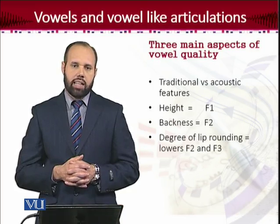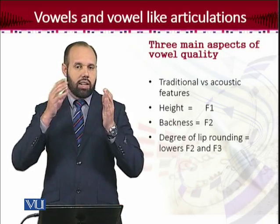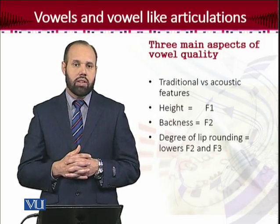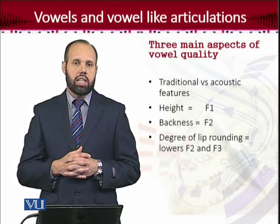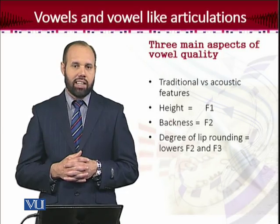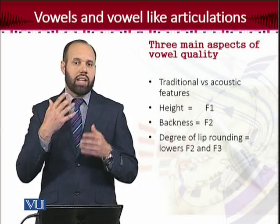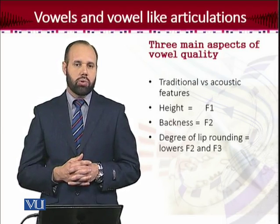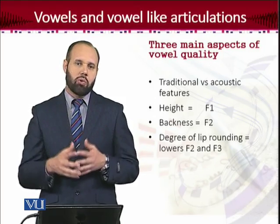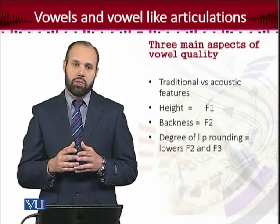The third factor for vowels we discussed earlier was lip rounding — whether a vowel is unrounded, with stretched lips, like 'ee', where the neutral position of lips is there, or there is something like half rounding, or fully rounded vowels. So lip position was our third category for describing vowels.